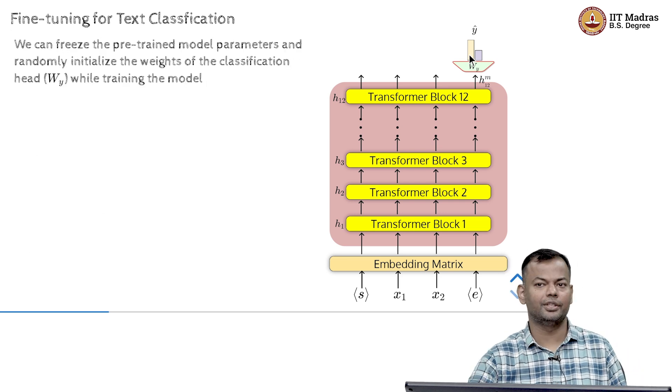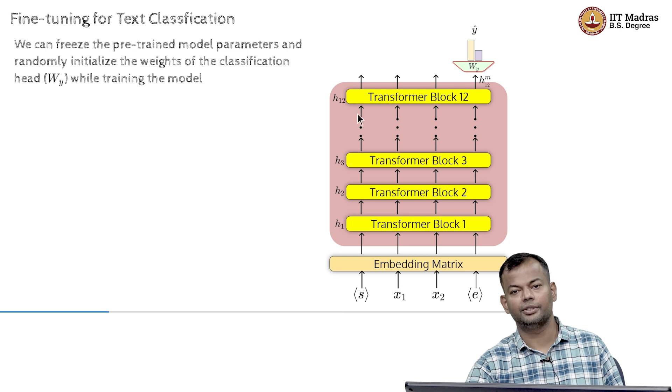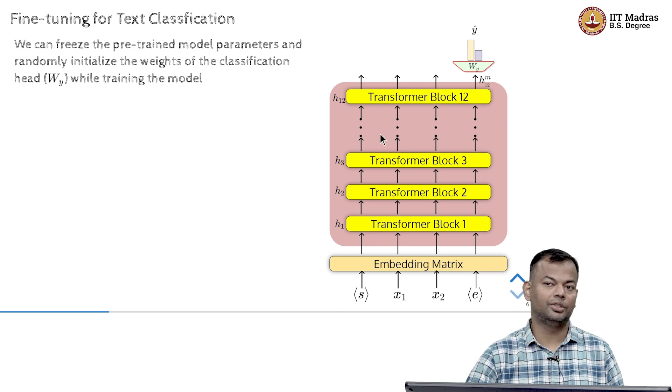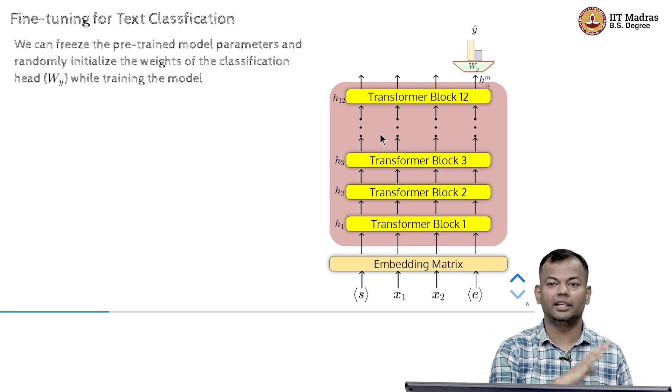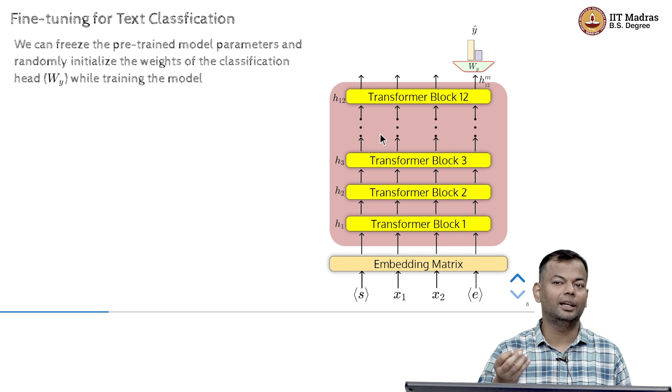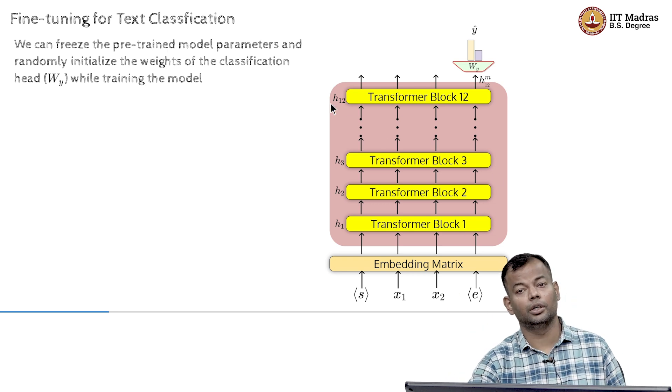Now, there are a few choices here. One is you could say that I have already invested a lot of thing in training this portion. So, why should I sort of change that? If I try to change that, everything that it has learned previously, it may forget. And just to specialize on one task, I don't want to sacrifice this entire thing, which I have learned using a lot of compute, lot of data.